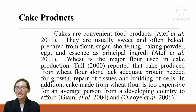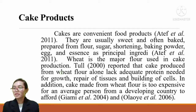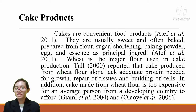Cake Products: Cakes are convenient food products, usually sweet and often baked, prepared from flour, sugar, shortening, baking powder, eggs, and essence as principal ingredients. Wheat is the major flour used in cake production. It has been reported that cake produced from wheat flour alone lacks adequate protein needed for growth, repair of tissues, and building of cells. In addition, cake made from wheat flour is too expensive for an average person from a developing country to afford.